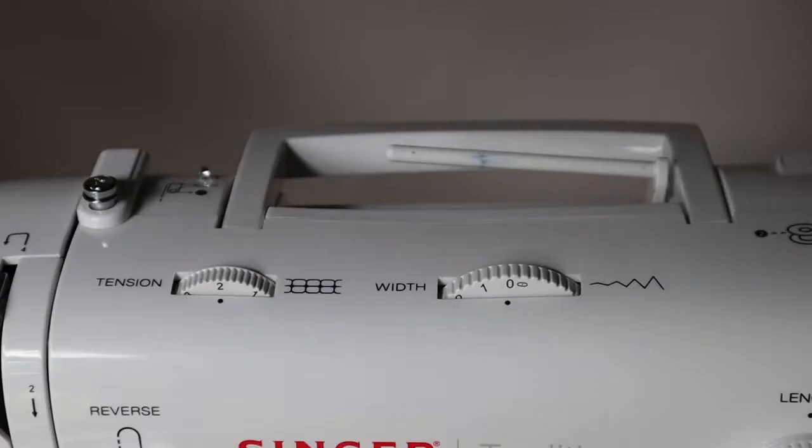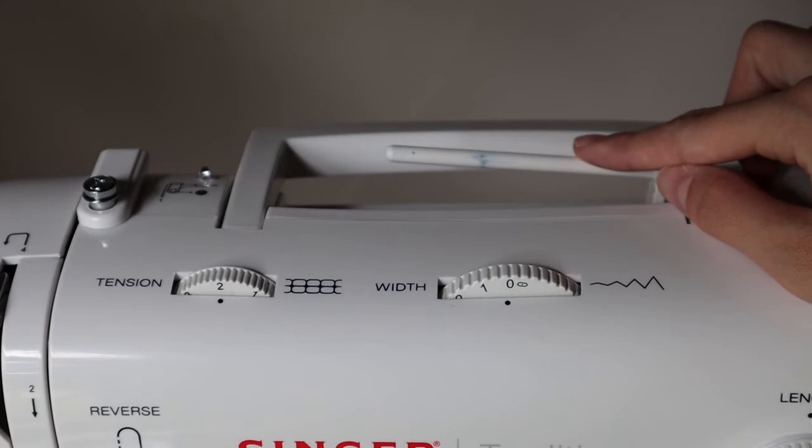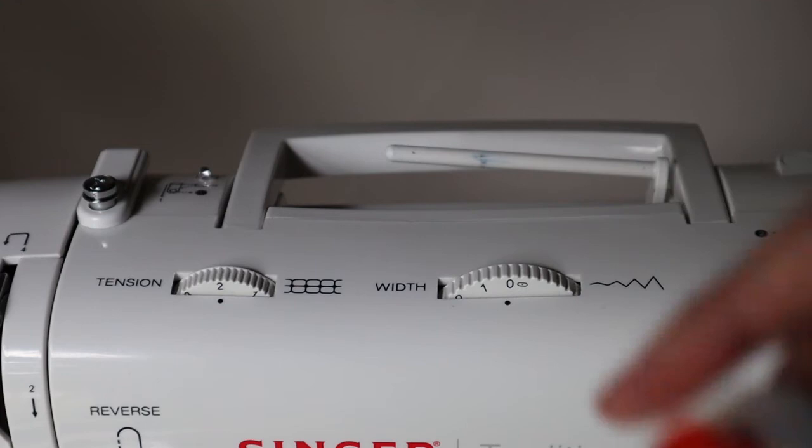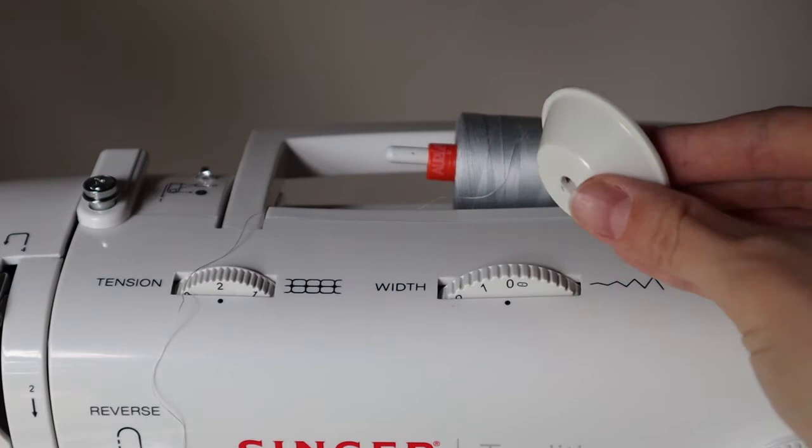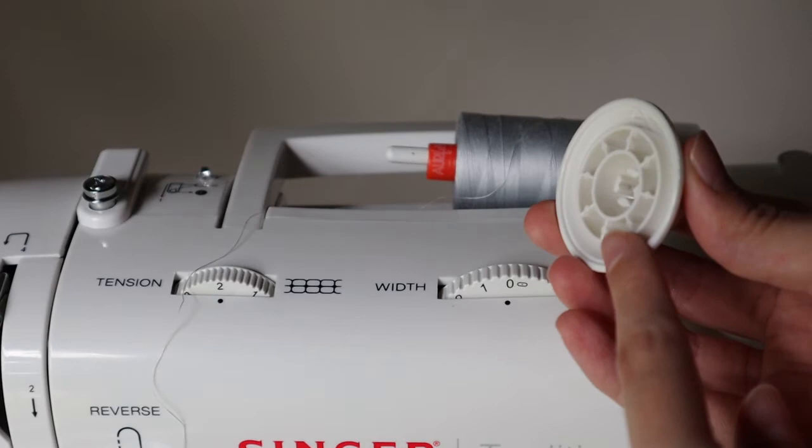First, we'll want to place our spool of thread onto the spool pin. This pin raises a tiny bit to assist you with this process and you just want to slide the spool of thread on and then place your spool cap on top of the thread. There are two different sizes - a smaller size on this side and a larger size on this side. You just want to place whichever one fits your spool of thread best.